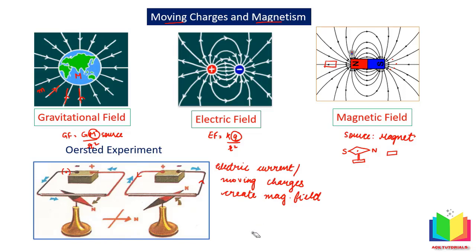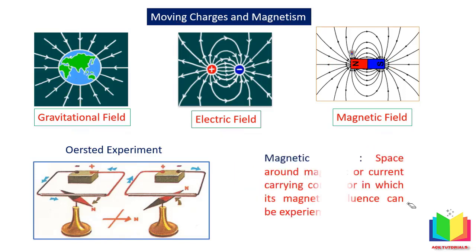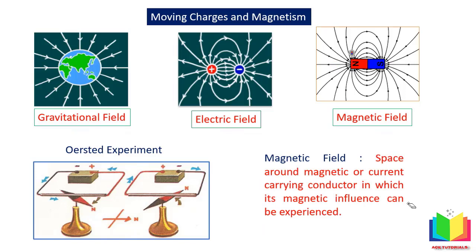We can define magnetic field as the space surrounding a magnet or current-carrying conductor in which its magnetic influence can be experienced.